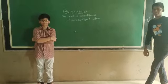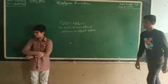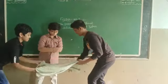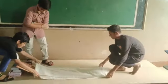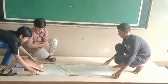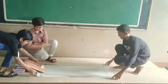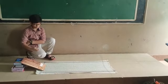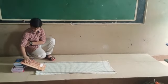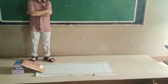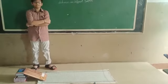Now I will put a piece of cloth on this piece of paper. Now I will release the pencil cell again on this cloth surface. It will cover the minimum distance on this cloth surface.